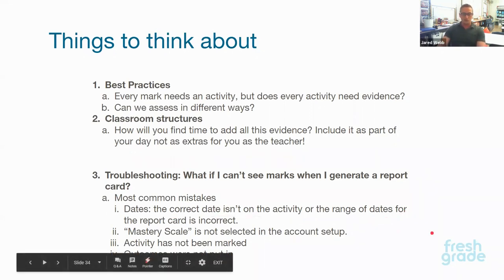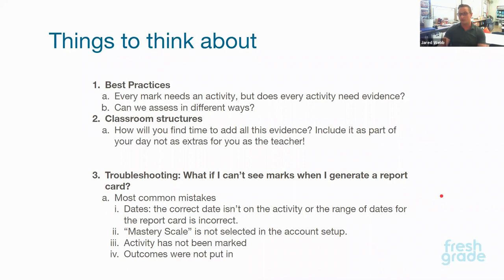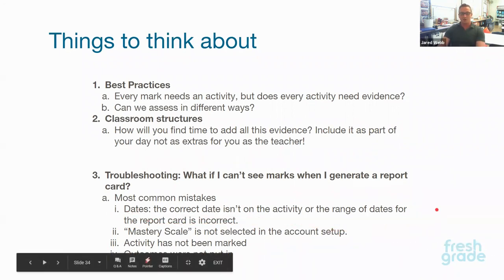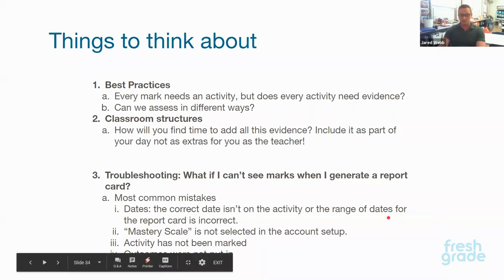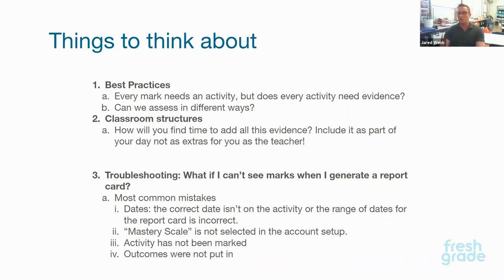A couple of troubleshooting things: if you can't see your mark, you're missing an outcome — those kinds of things. The most common mistake is the date. Sometimes when you change that date you'll be a year ahead or a year behind, or your range of dates doesn't match. Another big one: mastery scale is not selected. This was one of the biggest mistakes we found with different accounts when we tried to generate report cards our first year. Also, the activity may not be marked or the outcomes were not put in — the teacher went in and made the activity name but if they didn't make that custom outcome to put in there, then we don't have a mark.